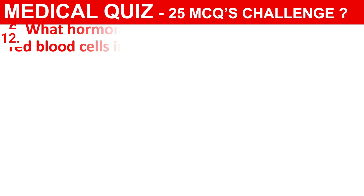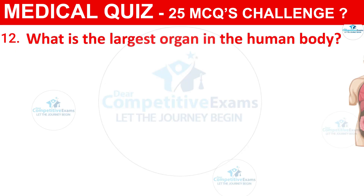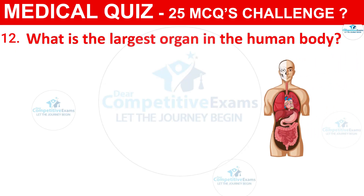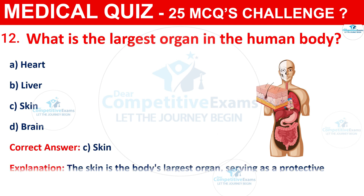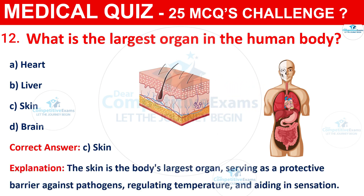Question 12: What is the largest organ in the human body? The options are Heart, Liver, Skin, or Brain. The correct answer is C, that is Skin. The skin is the body's largest organ, serving as a protective barrier against pathogens, regulating temperature, and aiding in sensation.